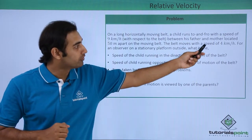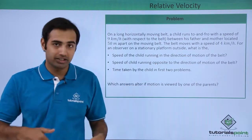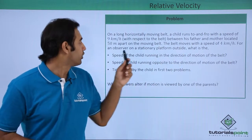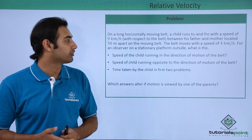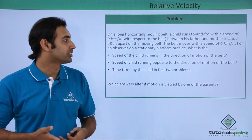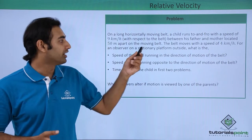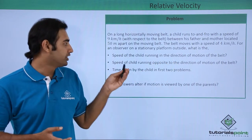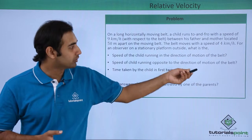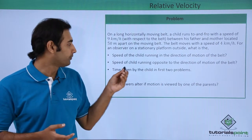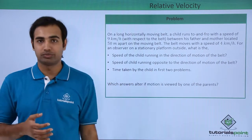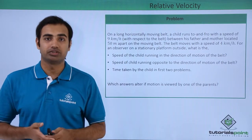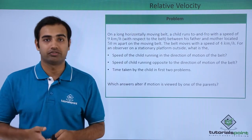The belt moves with a speed of 4 km per hour, so the belt itself is also moving. For an observer on a stationary platform outside, we need to find: what is the speed of the child running in the direction of motion of the belt, the speed when running opposite to the direction of belt, and the time taken by the child in each case. These things can be solved using the concept of relative velocity.